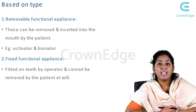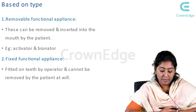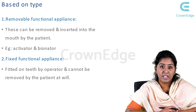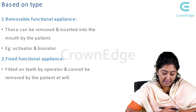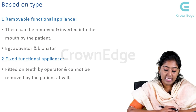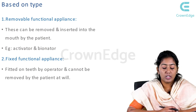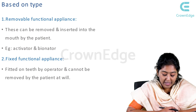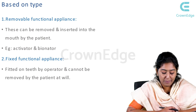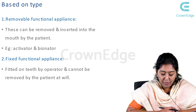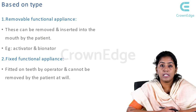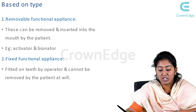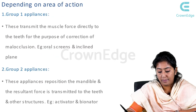Based on the type — whether removable or fixed — removable functional appliances can be inserted or removed by the patient, whereas fixed functional appliances are fitted onto the teeth by the operator and cannot be removed at the patient's will.